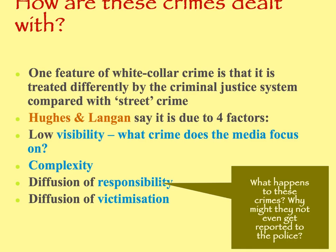Finally, you've got diffusion of victimisation. If people aren't aware that they're victims of a crime — like tax avoidance or tax evasion — it's really difficult to get those crimes reported to the police. If you've got so many victims and maybe everyone's been affected just slightly but across a vast number of people, it is quite difficult to identify the fact that there's a crime taking place. So what happens to these types of crimes and why might they not even get reported to the police?